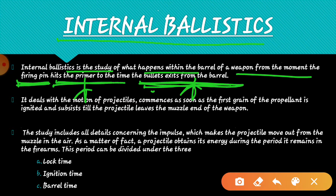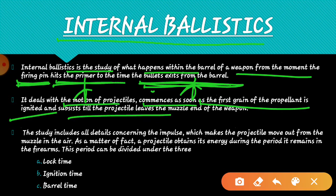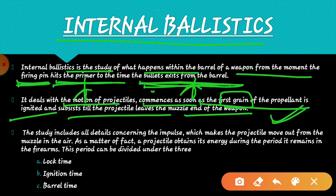It deals with the motion of projectiles commencing as soon as the first grain of propellant is ignited and subsists till the projectile leaves the muzzle end of the weapon. जो आपका internal ballistics है उसको आप इस तरह से भी define कर सकते हो - यह इसकी second definition भी कह सकते हैं. यह जो motion होता है projectile का उसके बारे में इसमें study करी जाती है, first grain burn होना start होता है वहाँ से आपकी पूरी mechanism start होती है, यह तब तक continue रहता है जब तक जो आपका projectile होता है वो आपके muzzle end - weapon का जो muzzle end होता है उसको छोड़ नहीं देता.